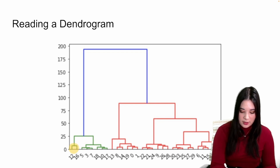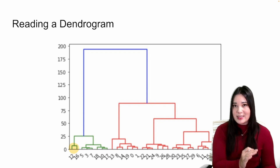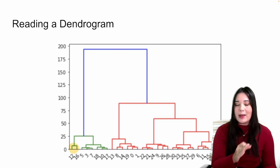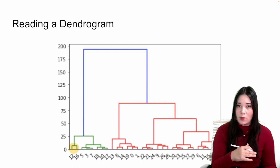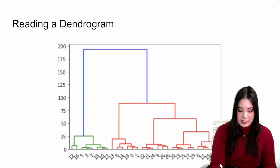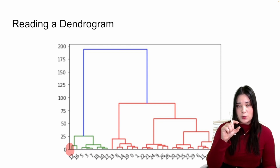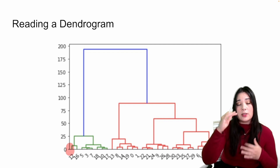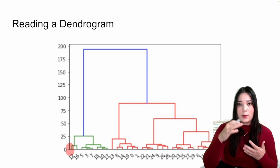For instance, here you can see that these two data points were merged together. An important thing to remember is that the x-axis in our dendrogram means absolutely nothing. The only thing we want to pay attention to is the vertical or y-axis. The vertical axis tells us how dissimilar two clusters were before they were merged. The shorter the distance, the more similar two clusters were before they were merged. The taller the distance, the more dissimilar two clusters were before they were merged.